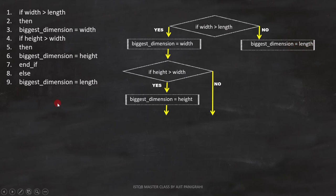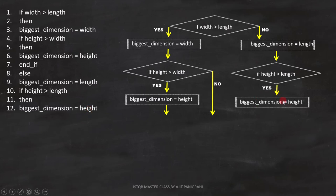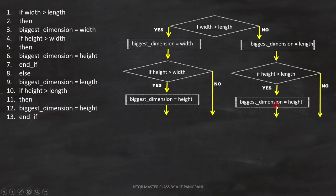Now let's focus on line number 10: if height is greater than length. This is a condition, so we have to represent it like this in the flowchart. Lines 11 and 12: then biggest dimension equals to height. In the flowchart, we have to represent it like this. Line 13 is end if — this end if is for the condition on line 10. And again, since there is no else statement in between, we don't have to do anything, and this is how we represent it on the flowchart.